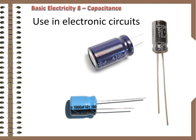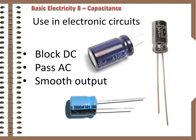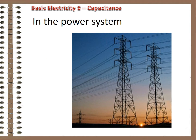Capacitors are widely used in electronic circuits for blocking direct current while allowing alternating current to pass. In analog filter networks, they smooth the output of power supplies. In resonant circuits, they tune radios to particular frequencies. In the power system, like inductors, capacitors have a Jekyll and Hyde effect — useful and troublesome.